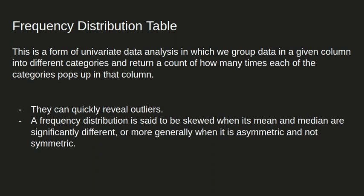Frequency tables can quickly reveal outliers in our data. A frequency distribution is said to be skewed when the mean and median are significantly different. If the mean and median are the same, the data is normally distributed. If not, the data is skewed — either positively or negatively. We'll cover skewness in more detail later in the series.